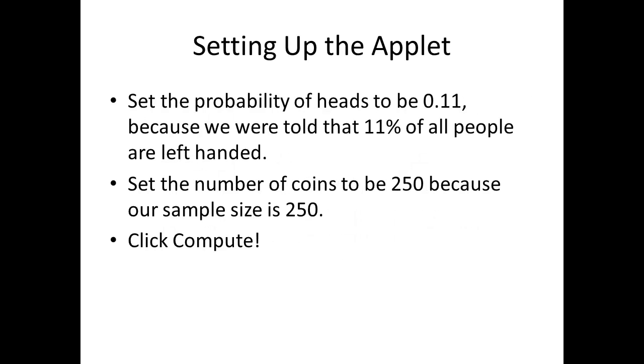Let's talk about setting up the applet. We're going to set the probability of heads to be 0.11 because we are told that 11% of all people are left-handed. We're going to set the number of coins to be 250 because our sample size is 250. Go ahead and click on Compute, and the applet will be set up for you.